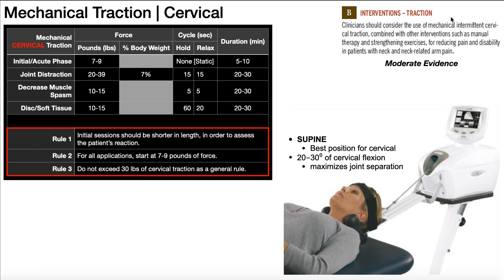The clinical evidence for cervical traction is moderate. Clinicians should consider the use of mechanical intermittent cervical traction combined with other interventions such as manual therapy and strengthening exercises for reducing pain and disability in patients with neck pain and neck-related arm pain. This neck-related arm pain would be more of a radicular type — compression of a nerve root in the neck leading to pain in the arm. The key is we're not just using mechanical traction as a standalone treatment; we also want to do manual therapy and strengthening exercises. There is moderate evidence for that use.